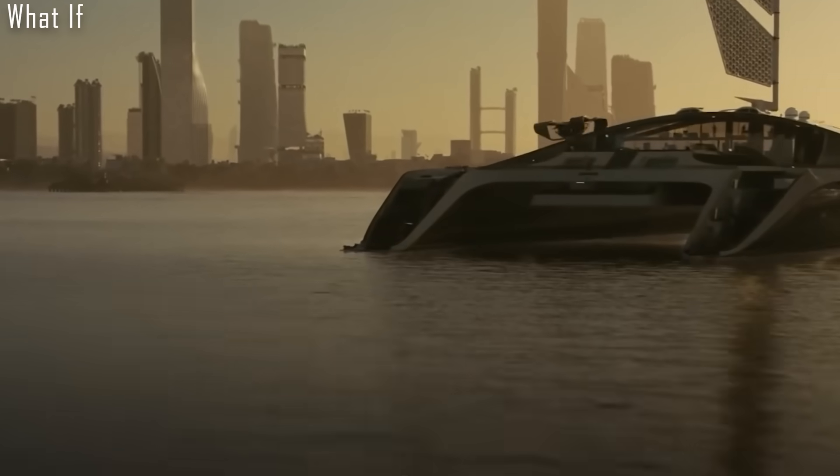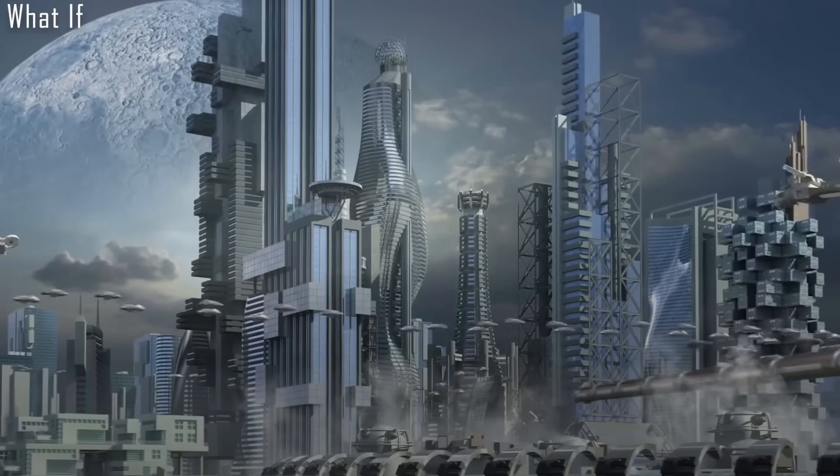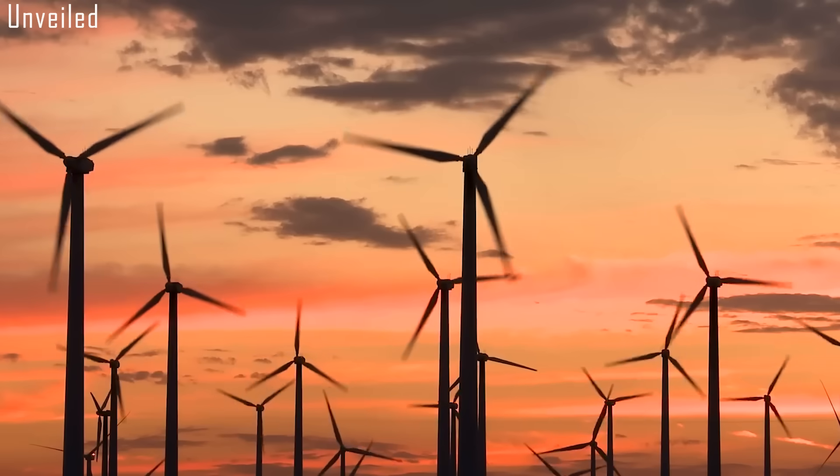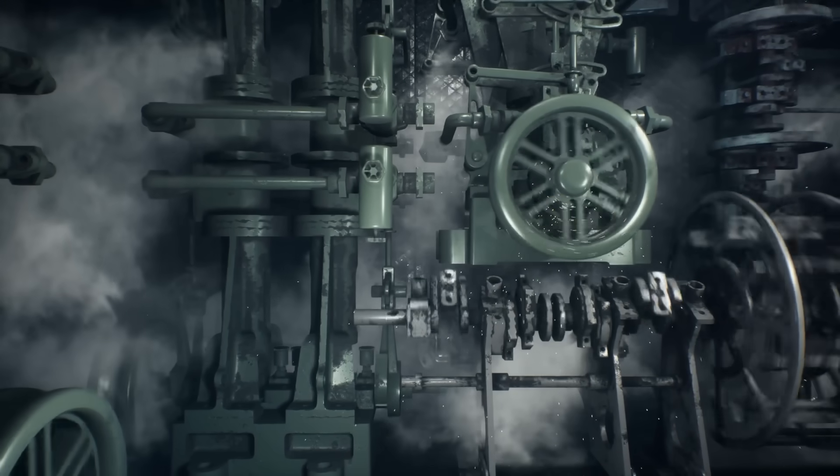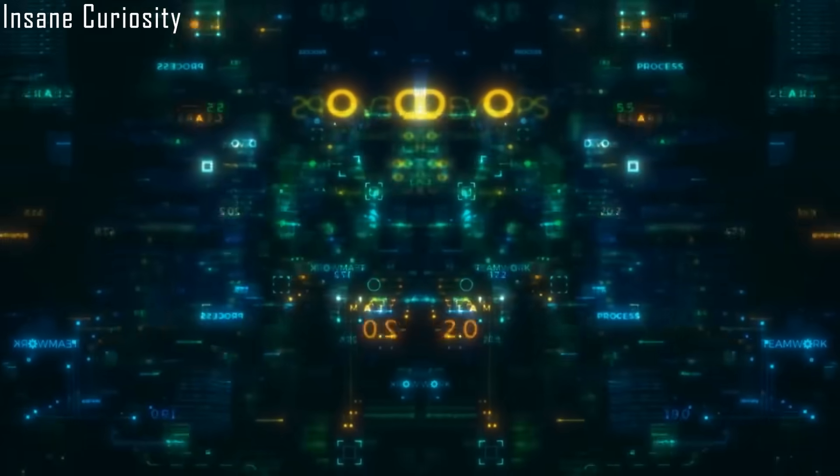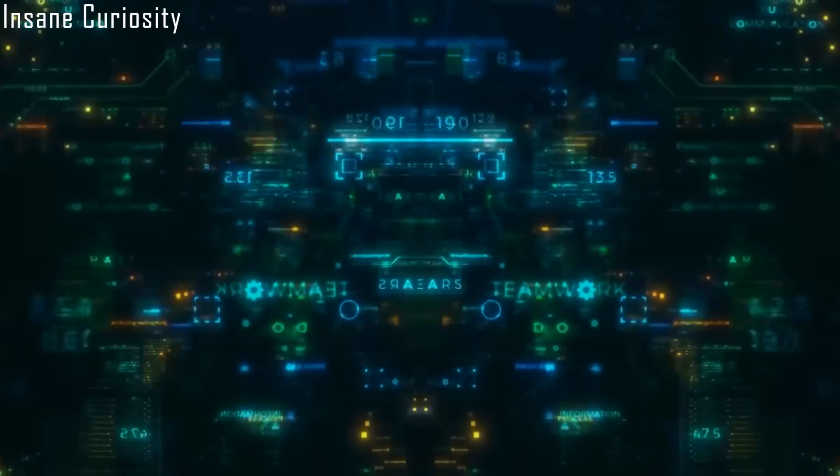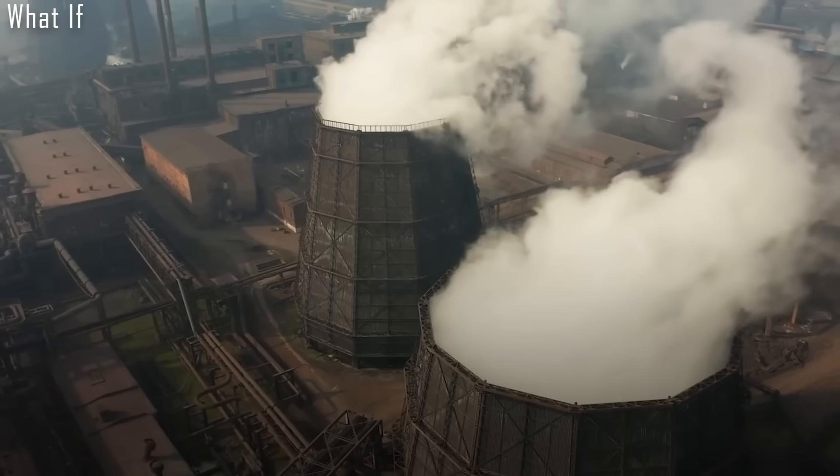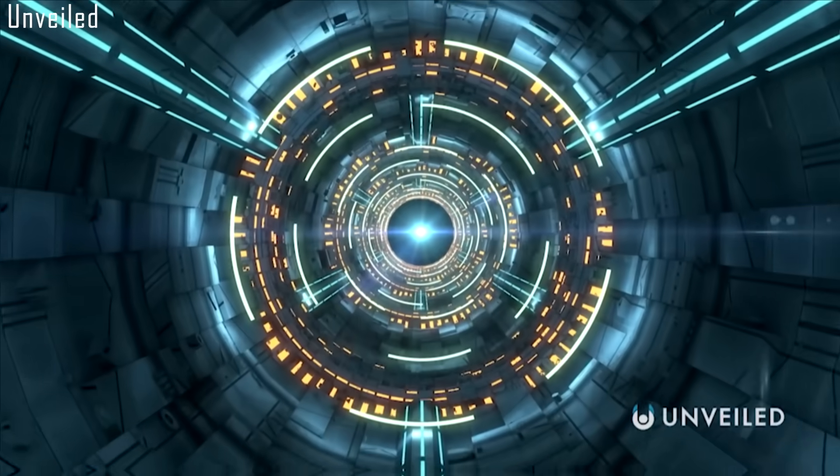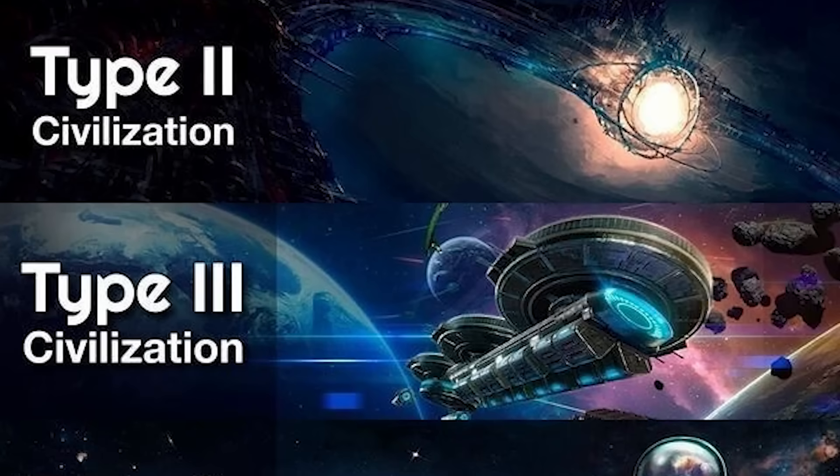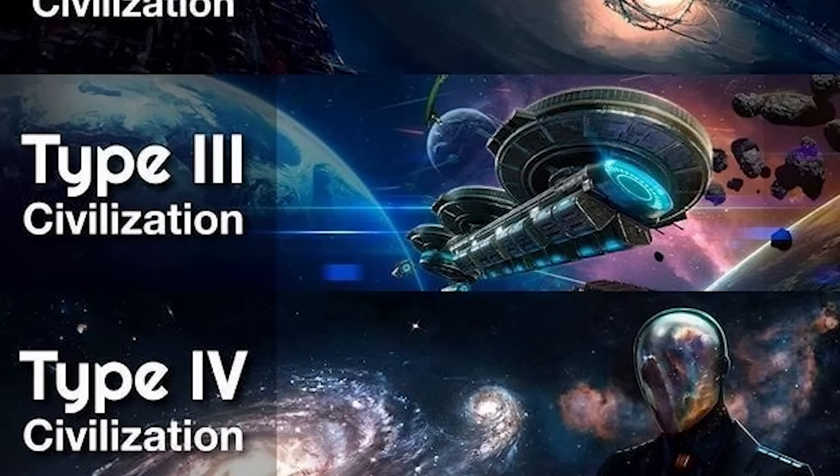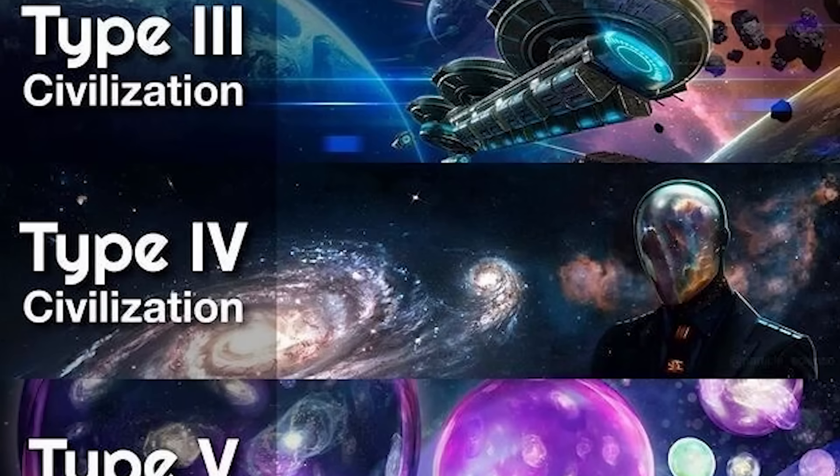According to experts, as a civilization grows larger and becomes more advanced, its energy demands skyrocket due to its population growth and the increasing requirements of its machinery. The Kardashev scale was developed to measure a civilization's technological prowess based on how much usable energy it has at its disposal. Kardashev originally proposed Type I, Type II, and Type III civilizations, but the scale has been extended since to include Type IV and Type V civilizations.